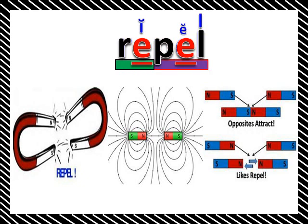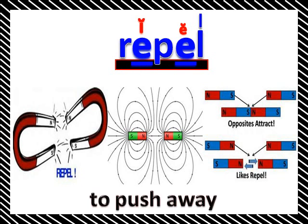Repel. Repel of a magnet is to push away. If you put a north pole and a north pole together, they're going to push away from one another. If you put a south pole and a south pole together, they're going to push away — just like you see with the two horseshoes on the left. But opposites attract: put a south pole and a north pole together and they pull together. Same poles repel, opposite poles attract.